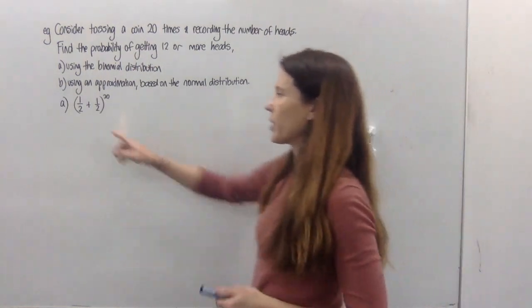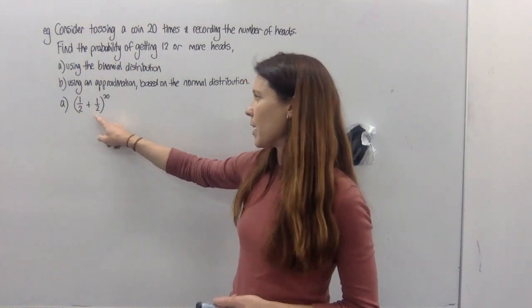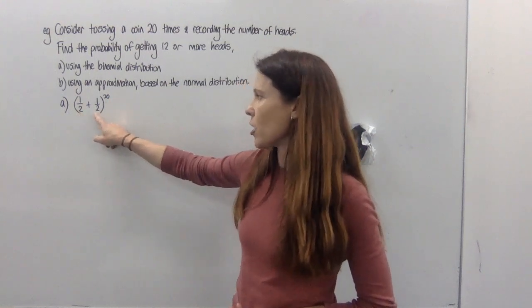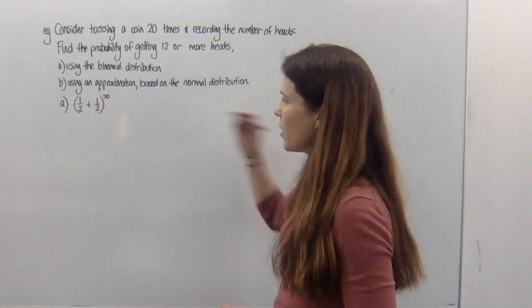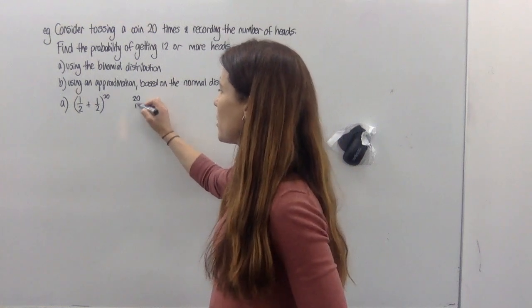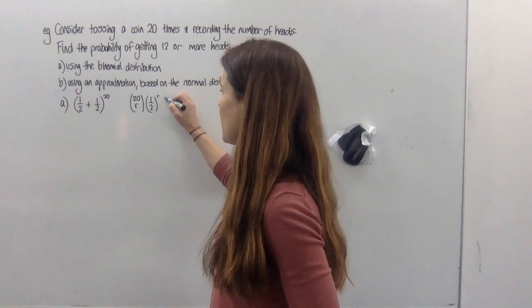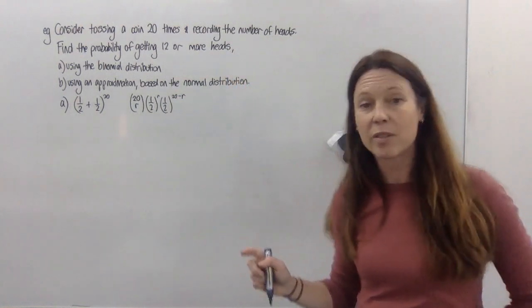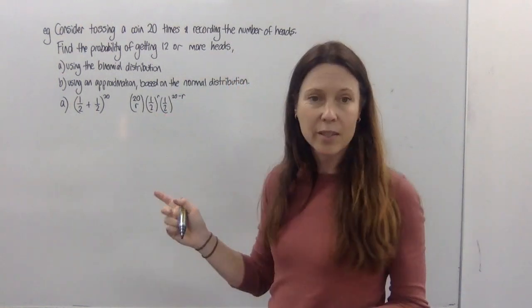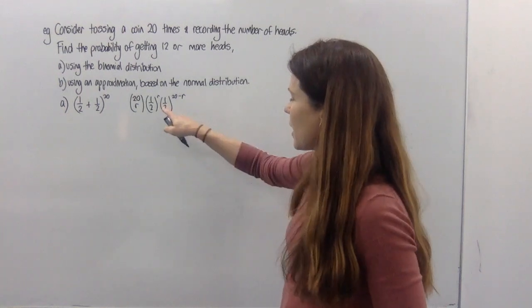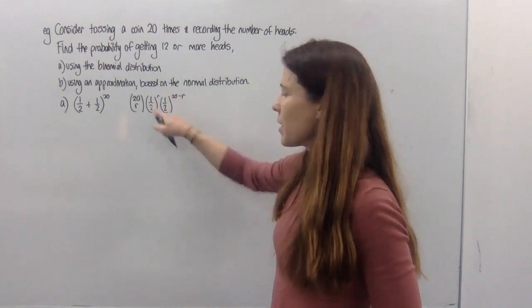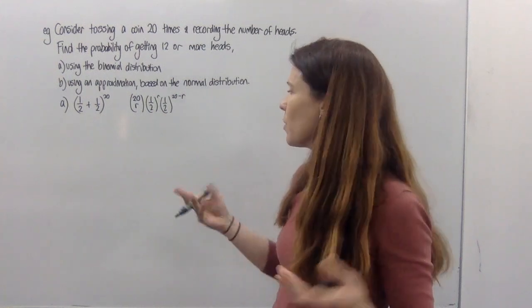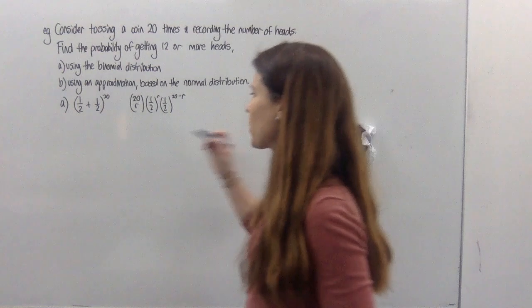So the expansion that we want to consider is half plus a half to the power of 20, because we've got the chance of success, the chance of failure, and 20 trials. Any one term is going to be 20 choose r, a half to the power of r, a half to the power of 20 minus r. So what's going to happen here, because the chance of success and failure is exactly the same, is that we're going to end up with a term here that we can simplify. We're actually going to have half to the power of 20 in every single term. You'll see that as we go along, we'll be able to take a little shortcut.